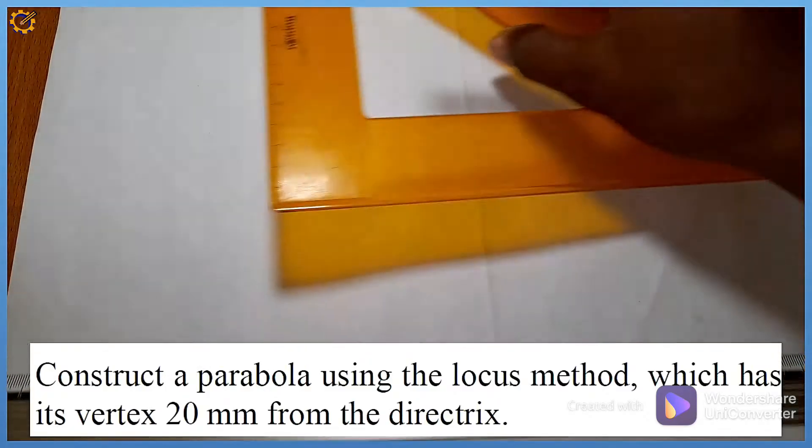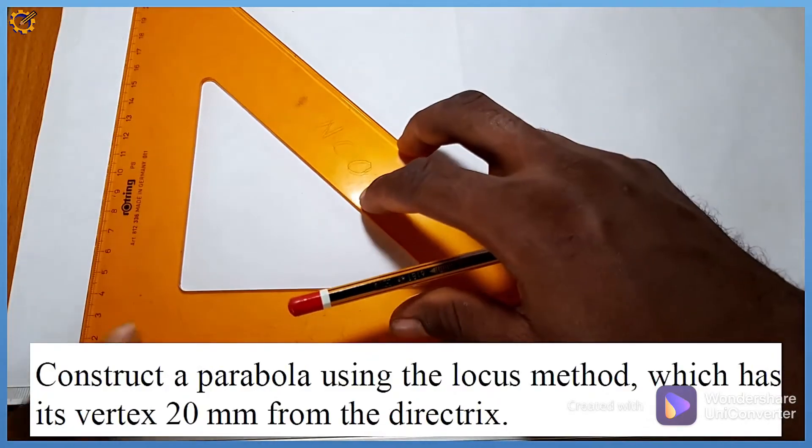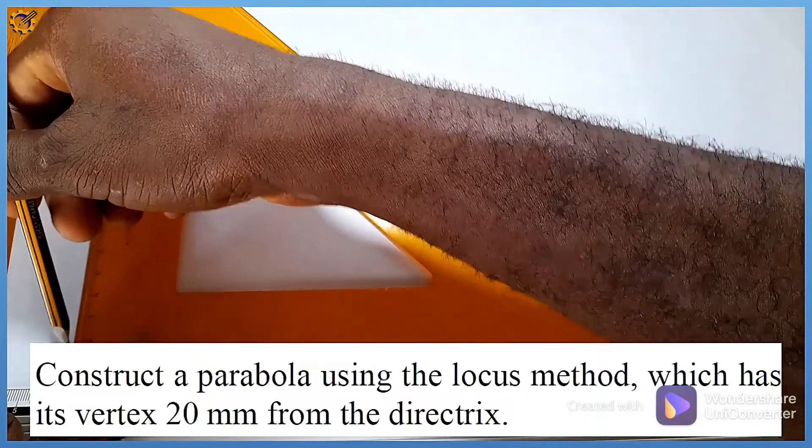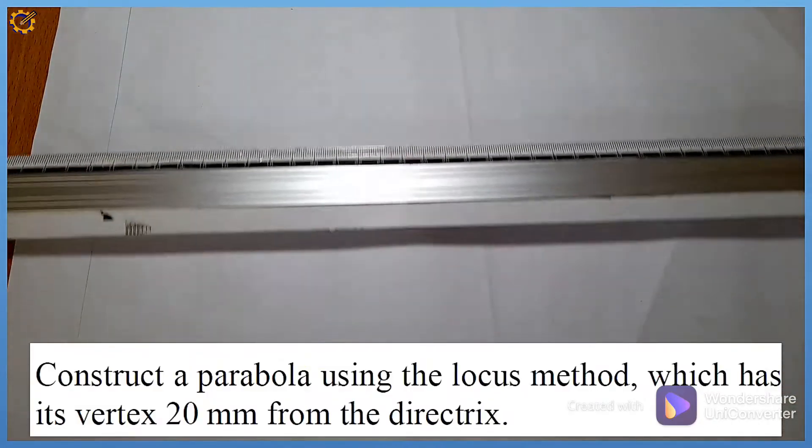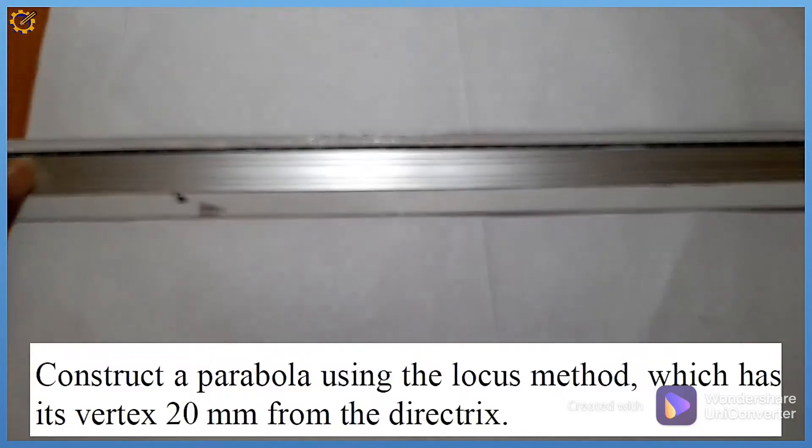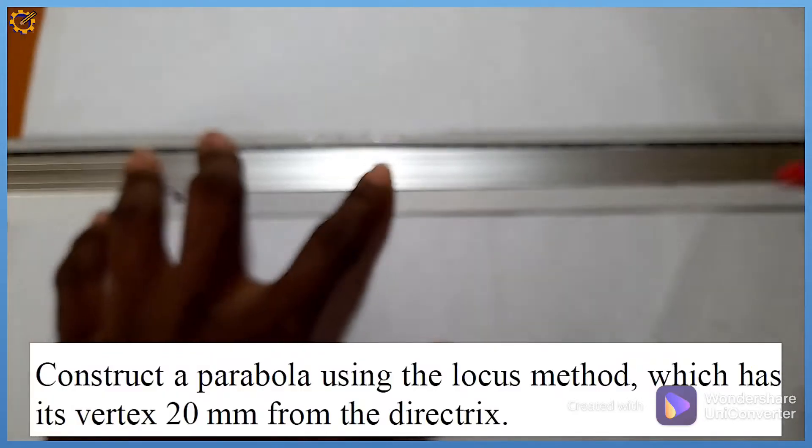To solve problems such as this, the very first thing we need to do is produce our directrix, which is going to be on the vertical plane like that. We'll draw a continuous line first of all, then after that I'm going to produce a horizontal line to it in this manner.